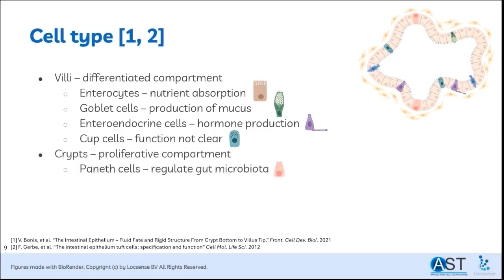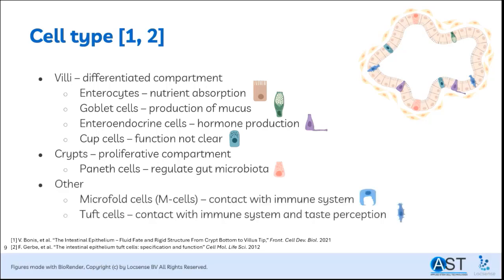The crypts are further away from the nutrients. From the crypts, cells mature and grow towards the tip, the villi. In the crypts, you can find Paneth cells, which are involved in the regulation of the gut microbiota. Lastly, in the gut, you can find microfold, or M cells, which are in contact with the immune system, and tuft cells, which are also in contact with the immune system and are thought to be involved in taste perception.